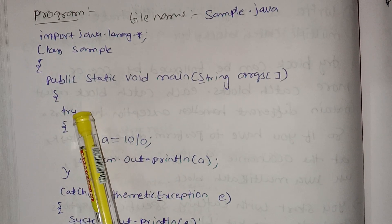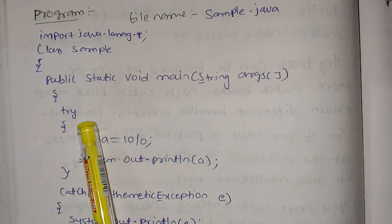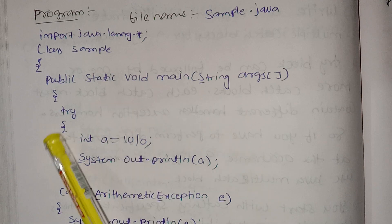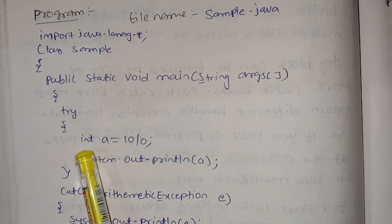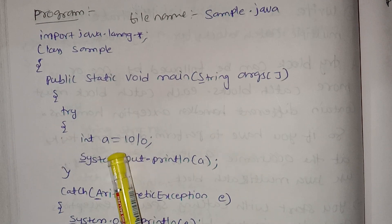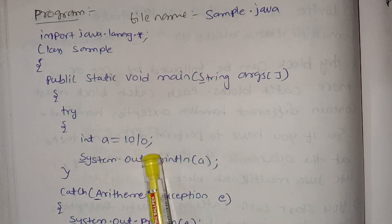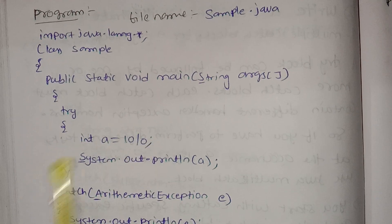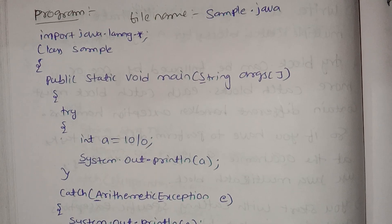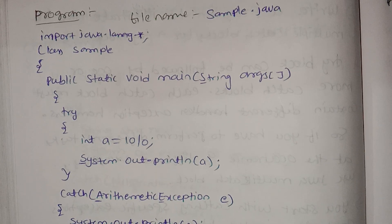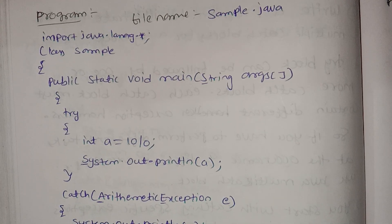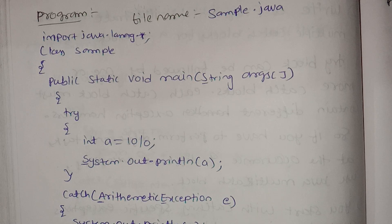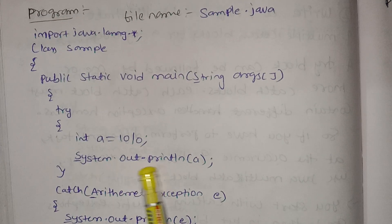In the try block, we write: int a = 10 / 0. This will not be an automatic exception — next I will show you using System.out.println.